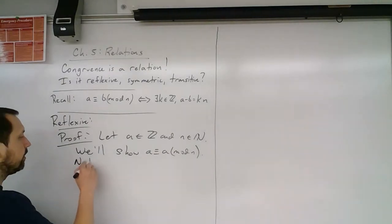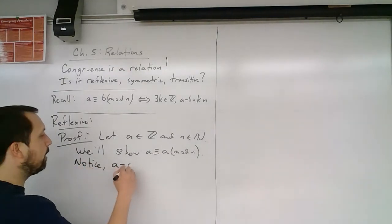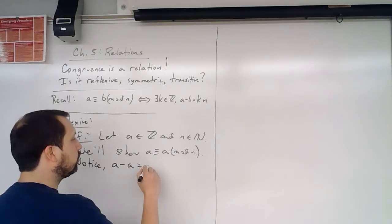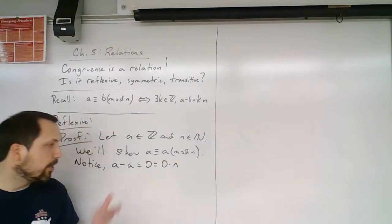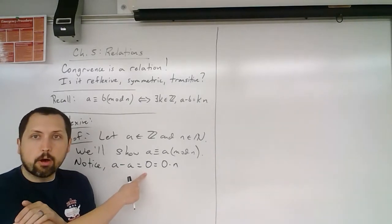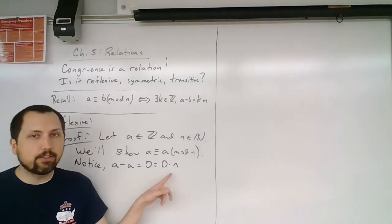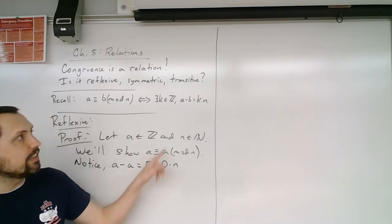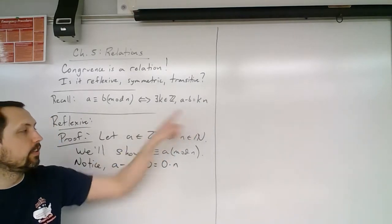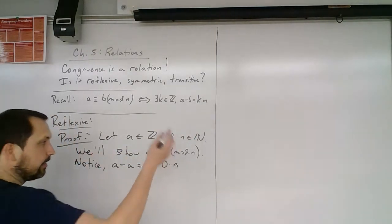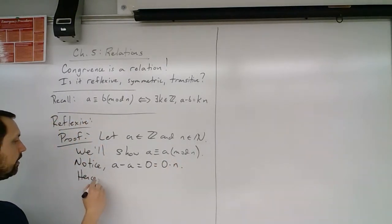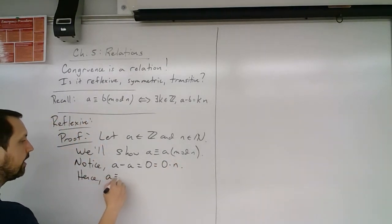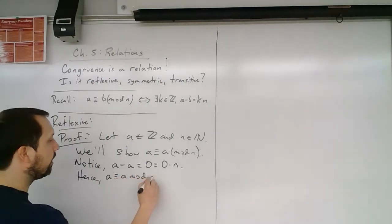So notice that we have a minus a is equal to zero, which is the same thing as zero times n. So I show that a minus a is equal to zero, but that's the same thing as zero times n. And obviously zero is an integer. So notice this is true.